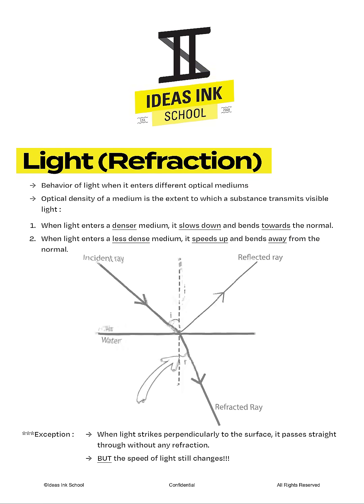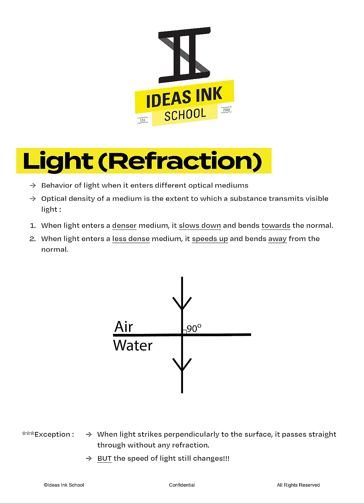The only exception to the above scenarios is when light strikes perpendicularly to the boundary between mediums. When that happens, light will pass straight through and no bending occurs. However, please note that although light does not bend, its speed still changes according to the medium that it enters.